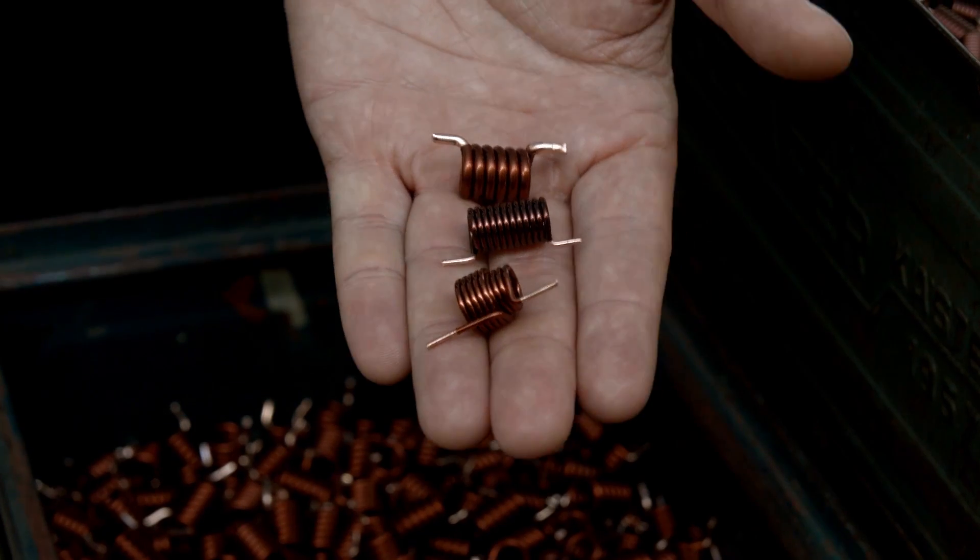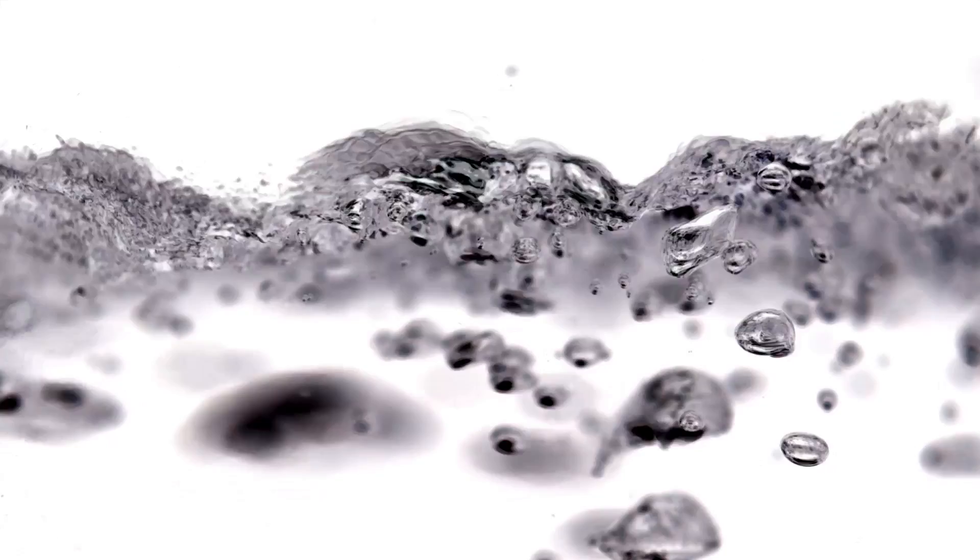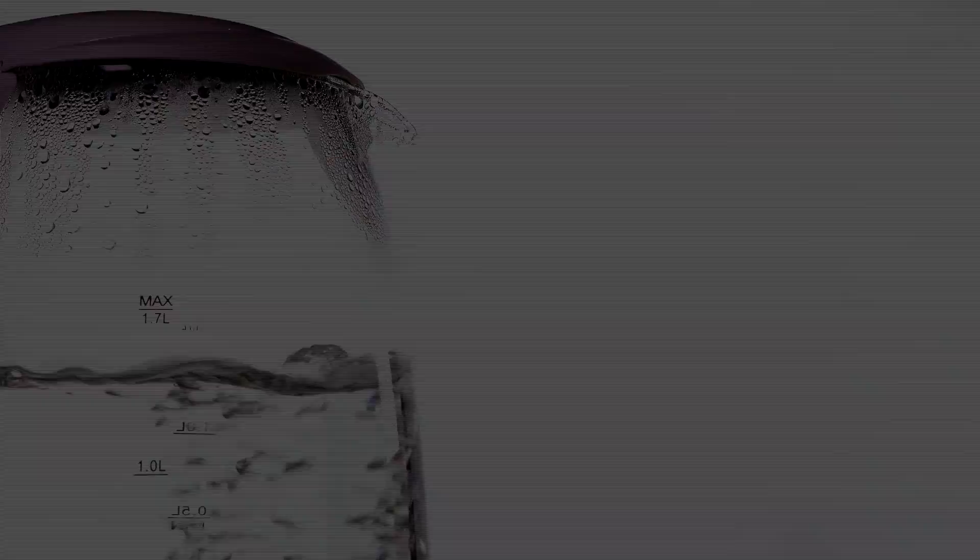ABB invented its precursor over 90 years ago. If there is a surge of electrical current or a fault is detected, the circuit breaker will cut off the power within 10 milliseconds, faster than a blink of an eye.